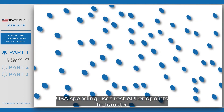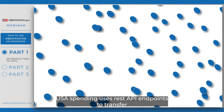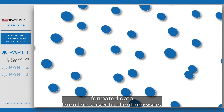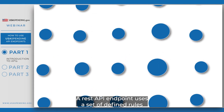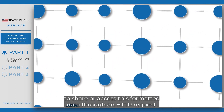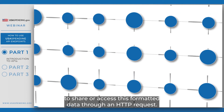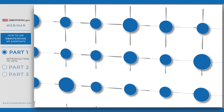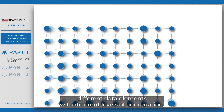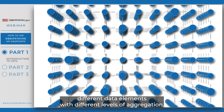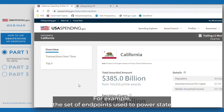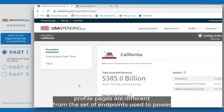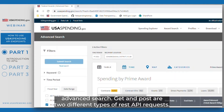USA Spending uses REST API endpoints to transfer formatted data from the server to client browsers. A REST API endpoint uses a set of defined rules to share or access this formatted data through an HTTP request. USA Spending endpoints each present different data elements with different levels of aggregation and enable different sets of filters. For example, the set of endpoints used to power state profile pages are different from the set of endpoints used to power advanced search.